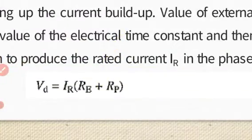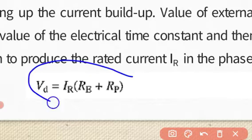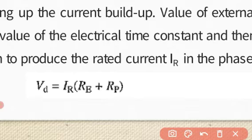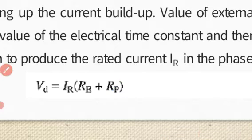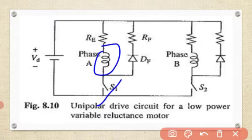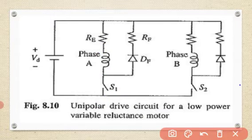This equation is used to choose the values of RE and RP. Here, RE plus RP — where RP is the phase winding resistance — are used. The phase winding has inductance but also its own resistance, which is considered as the phase winding resistance RP.